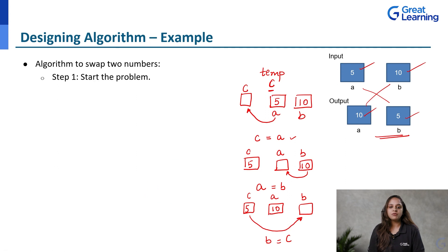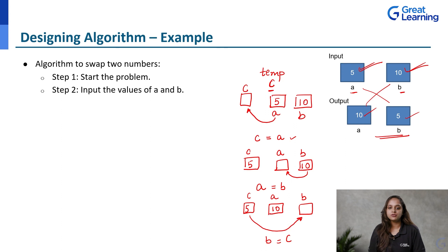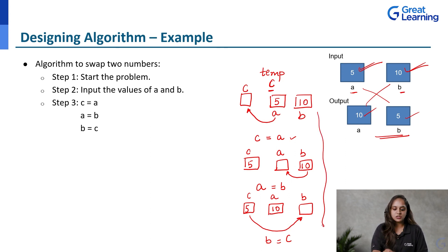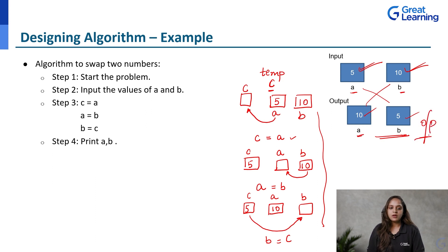Now let us write the algorithm for this swapping process. The first step is to start the problem. The second step is to take input values and store them in locations A and B. Step three is to perform the swapping logic using the temporary location C: assign A to C, assign B to A, and assign C to B. Step four is to display the final result — the values of A and B. The final step is to stop the problem. These are the steps to swap two numbers using a temporary variable.